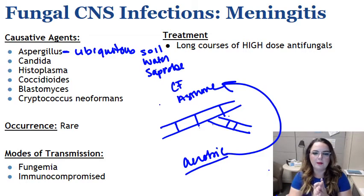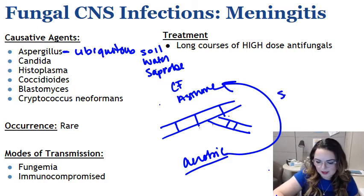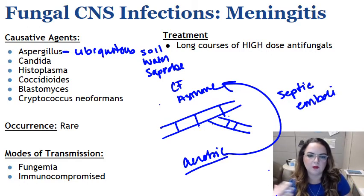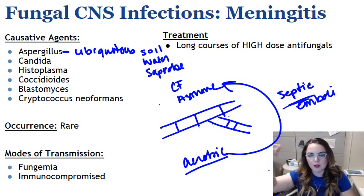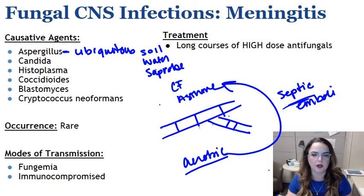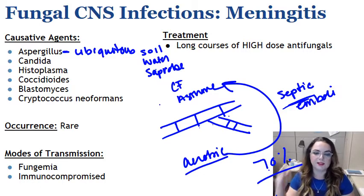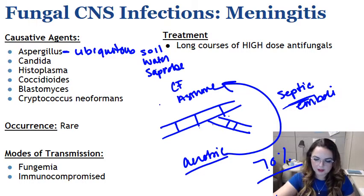Because aspergillus is so angioinvasive, it has a really good ability to spread hematogenously to extra-pulmonary sites, leading to multiple septic emboli forming. These septic emboli travel through the blood to the brain where abscess formation occurs, and you can see them distributed all over. Mortality despite specific antifungal therapy is upwards of 70%, so if this one gets to the brain it's really dangerous. It's diagnosed using silver stain in the mycology lab.